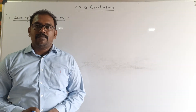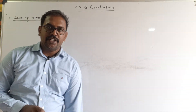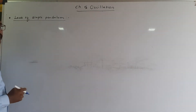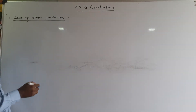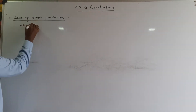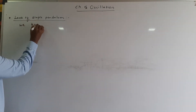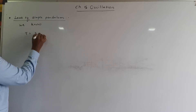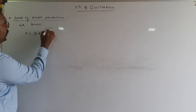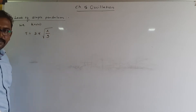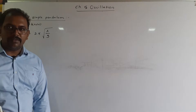The next article from the chapter on oscillation is the laws of simple pendulum. We learned an expression for the period of a simple pendulum and got T = 2π√(l/g). This is the formula for the period, and by using this we have to write the laws of simple pendulum.